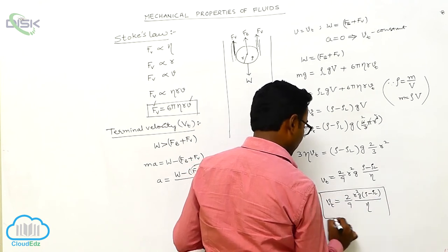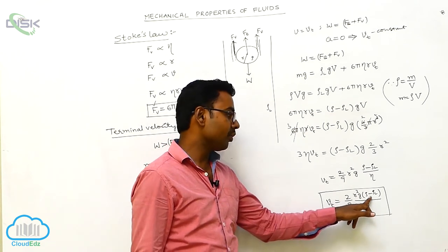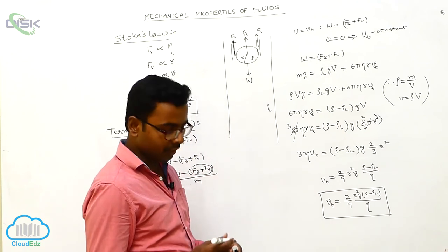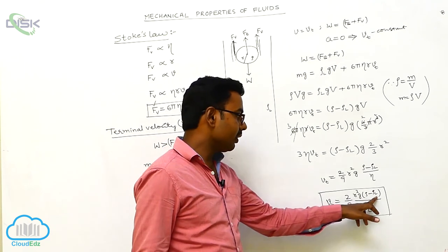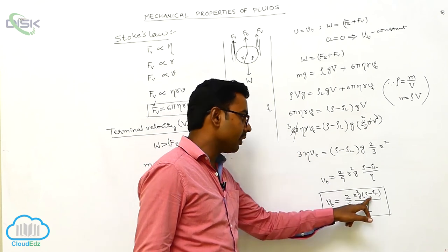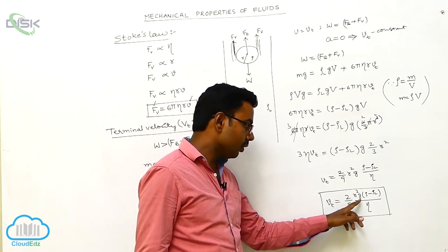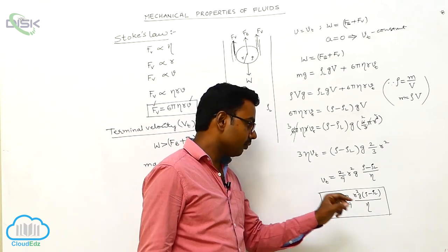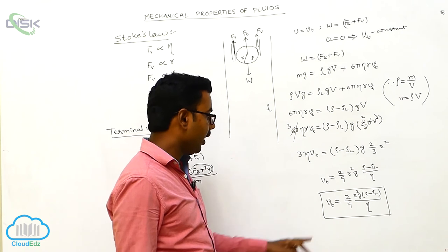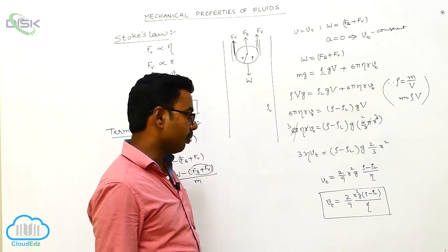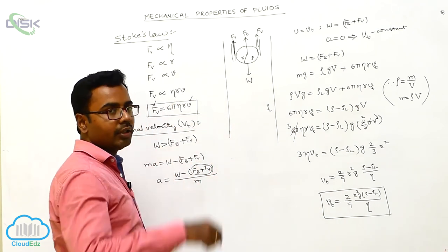Terminal velocity Vt obtained by a sphere falling in a fluid column is Vt = (2/9)·R²·g·(rho − rho_L) / eta. This formula is also applicable for the terminal velocity of raindrops falling in the atmosphere, where rho_L is the density of the atmosphere, rho is the density of water, R is the radius of the water droplet, g is acceleration due to gravity, and eta is the coefficient of viscosity of the atmosphere.